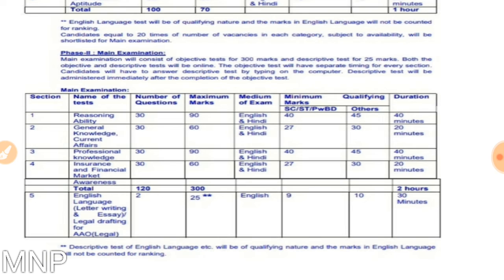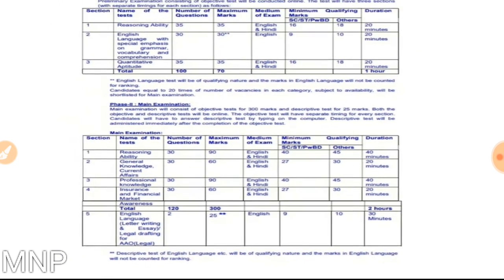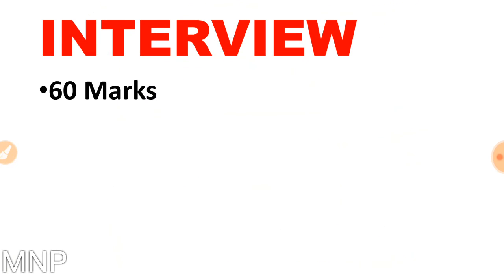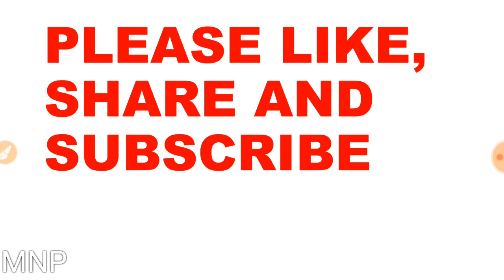After the mains, there will be a fifth section — a descriptive paper of English language involving letter writing and essay. For the WAO legal post, you also have to write legal drafting, which will be of 25 marks. The descriptive test of English language is of qualifying nature and will not be counted for ranking. You will get an additional 30 minutes for the descriptive paper. After that, there will be an interview of 60 marks, following which your final selection will be done. Interested candidates can apply as soon as possible. Have a nice day and good luck.